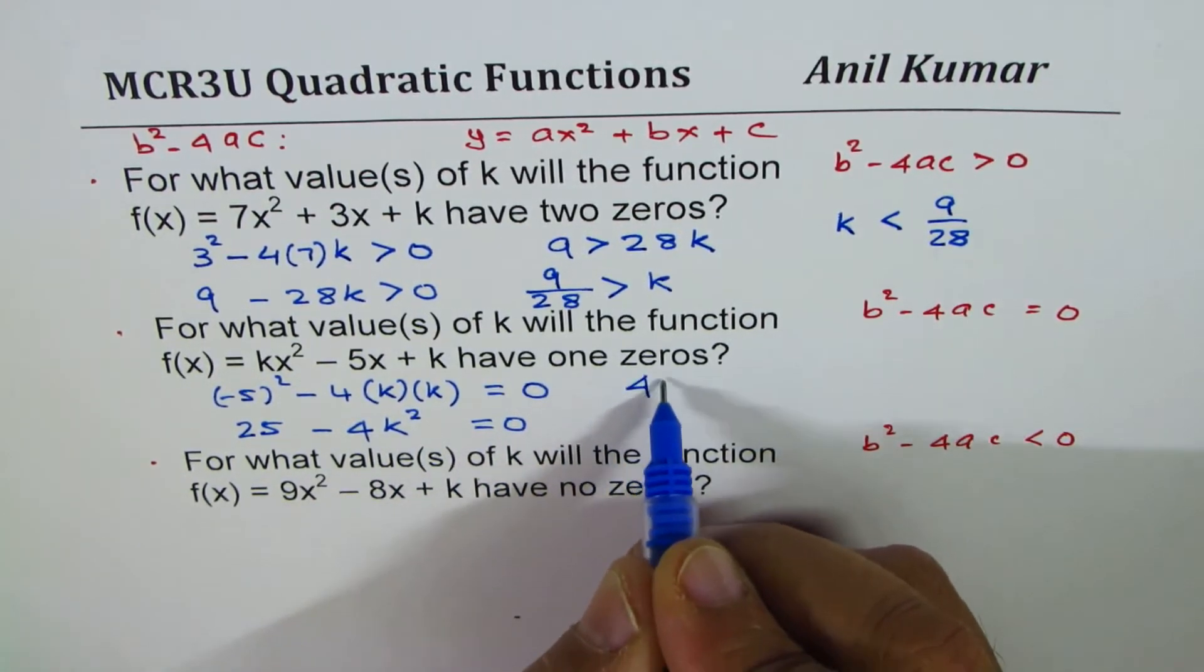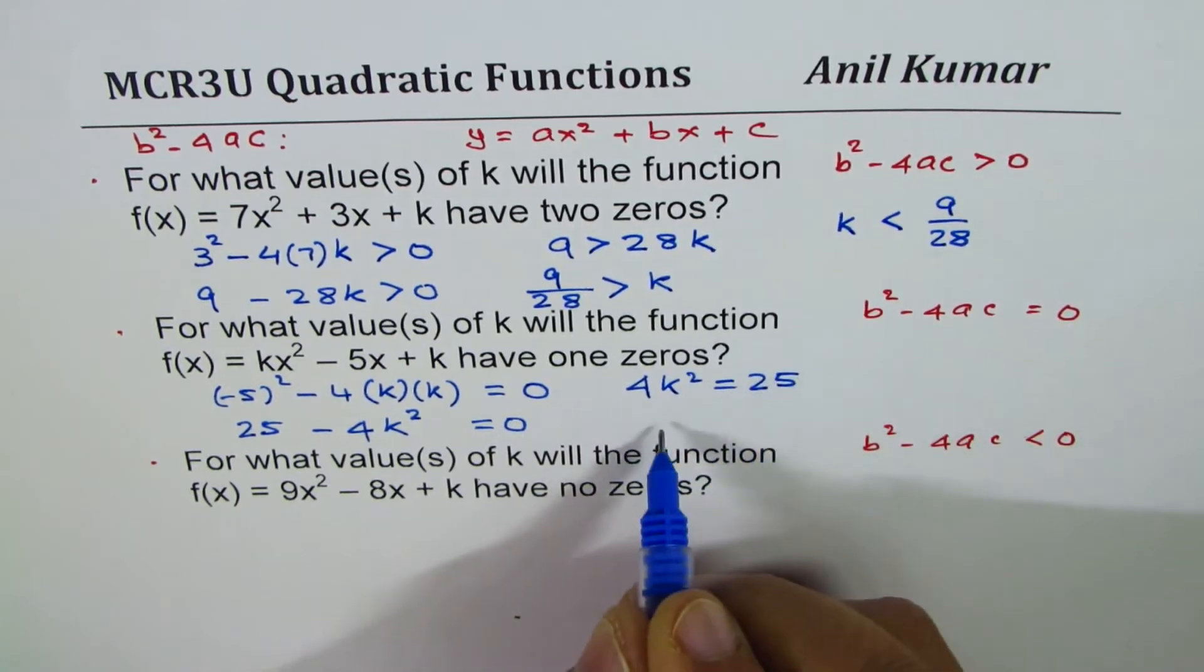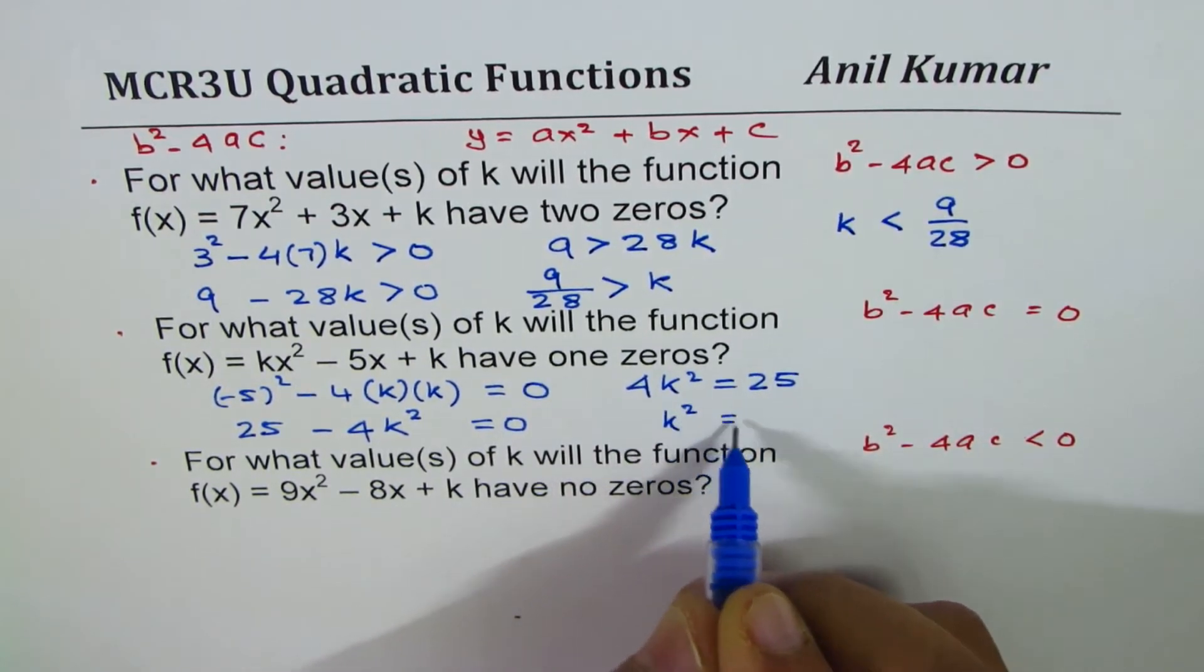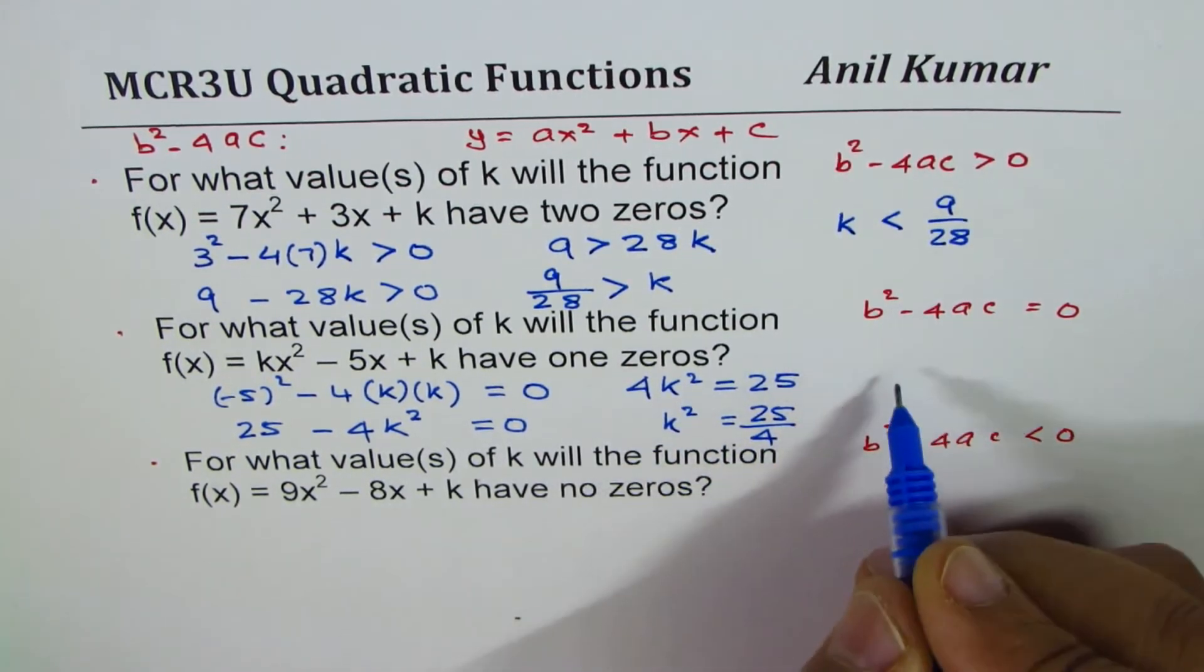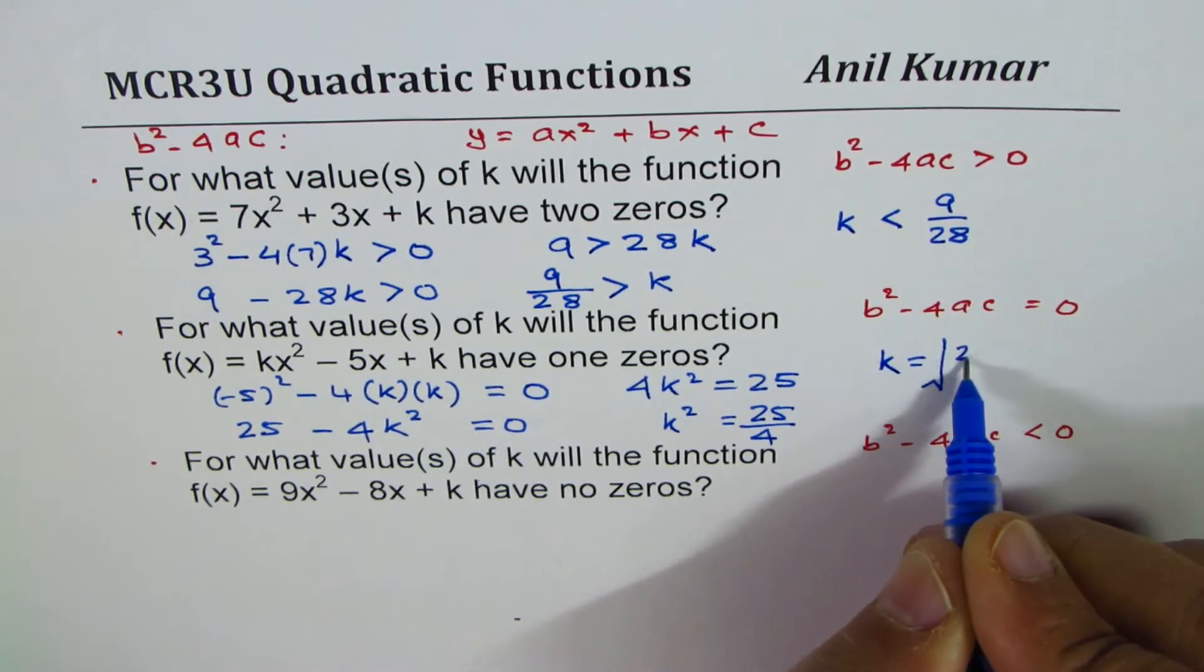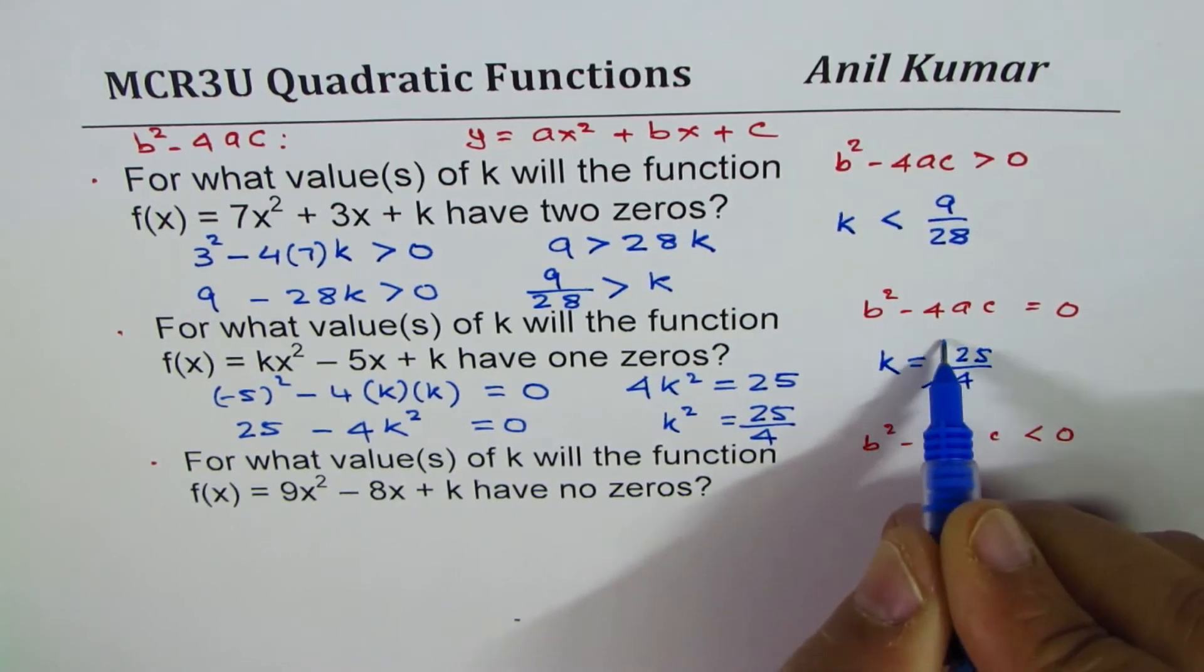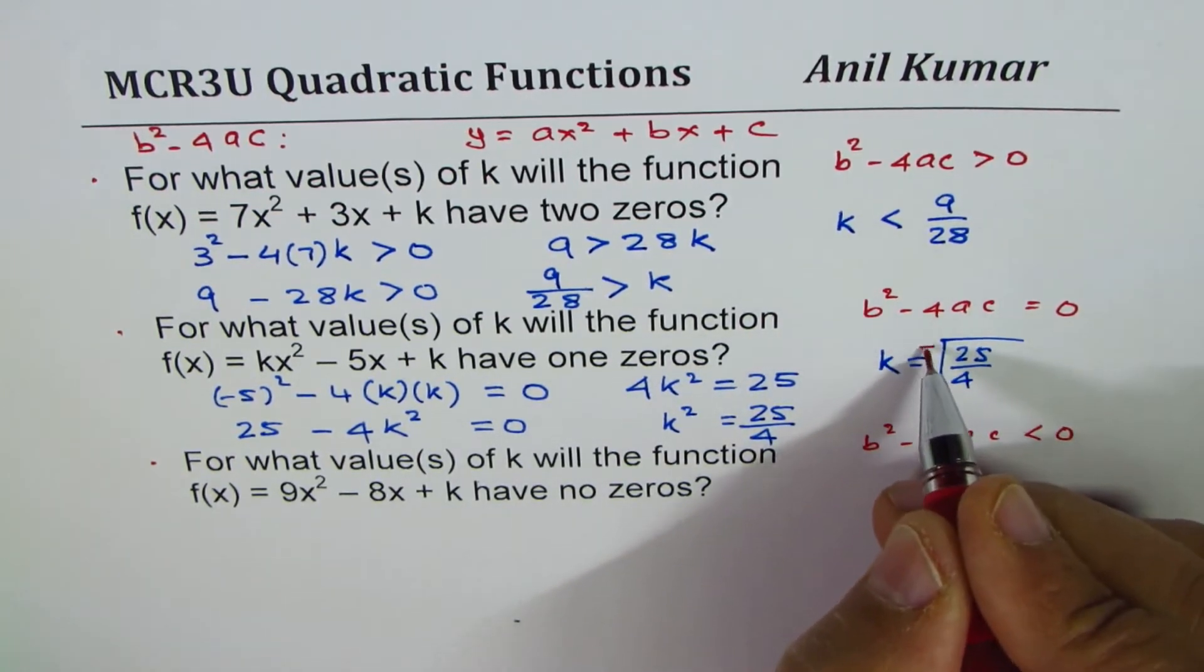So when we want to solve it we will take it to the other side we say 4k² equals to 25 or k² equals to 25 over 4. When you square root it you get 2 values of k, so when you square root 25 over 4 you get 2 values, plus and minus 5/2.